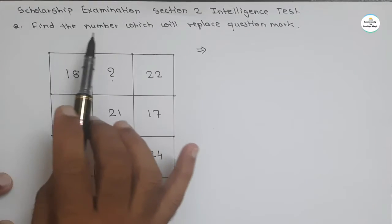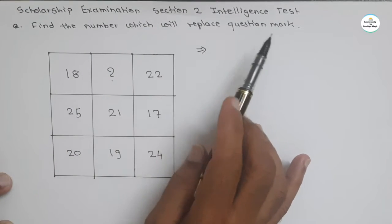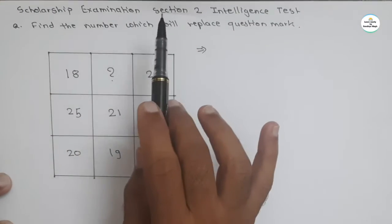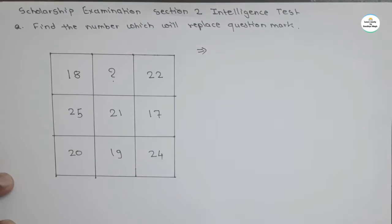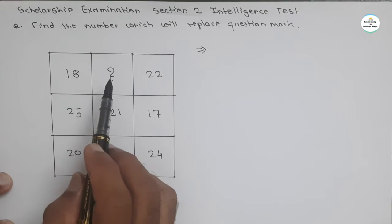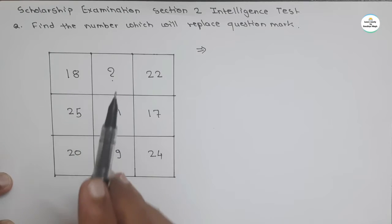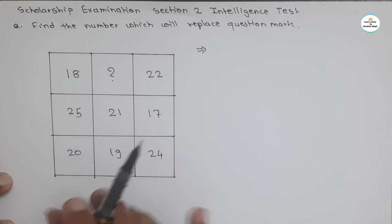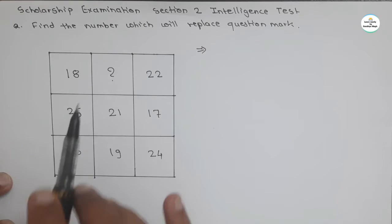See here the question: Find the number which will replace question mark. This question is related to scholarship examination section 2 intelligence test. These nine numbers are given and one question mark is given. We have to replace that question mark with proper number. So by looking at this there will be some relation. We have to find the relation and find our answer.